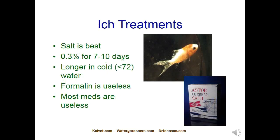This slide talks about ich treatments and mentions salt. There's a form of this parasite under the skin and another form in a packet on the bottom. You can only kill ich in the swarmer form, and salt waits to catch it at that stage — it's there all the time. The swarmer comes out of the packet, hits the salt, and crenates. Salt is great, but I honestly prefer Mardel Clout.